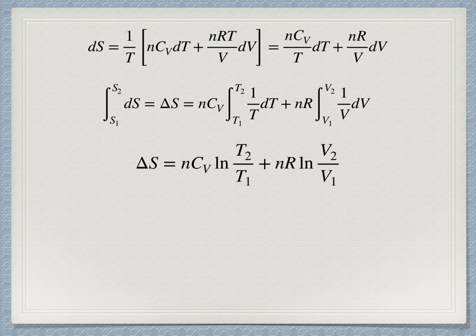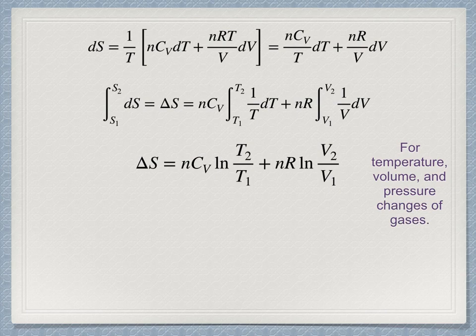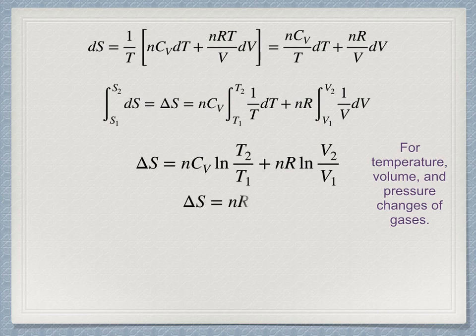This relation holds for any change of state of an ideal gas. This is how one can calculate entropy changes involving the changes of temperature and volume of a gas. If the temperature is held constant, isothermal, which means that T2 is equal to T1 so that the temperature ratio is just T1 over T1 which is 1 and hence ln of 1 is 0, then it reduces to this expression.